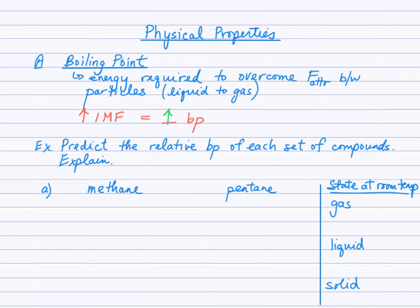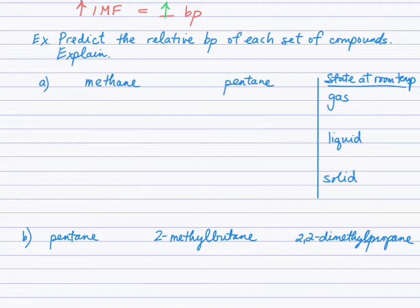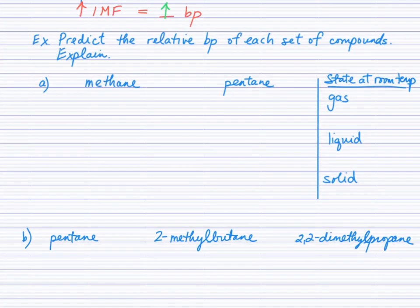We're going to use our knowledge of organic structure and attractive forces between particles to predict the relative boiling points of each set of compounds with an explanation. The first example looks at methane and pentane. I'd like you to pause the video, draw methane and pentane, and then predict the type of intermolecular force that each experiences. Then compare the relative strengths to predict the relative boiling point.